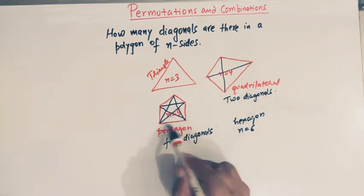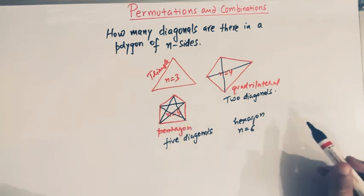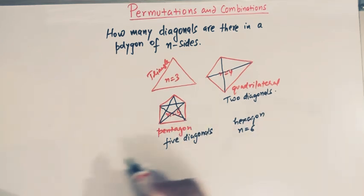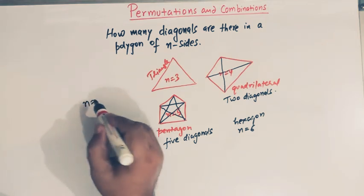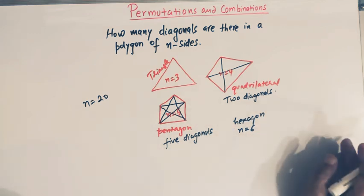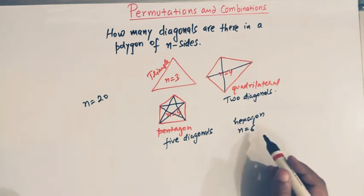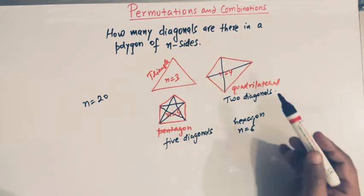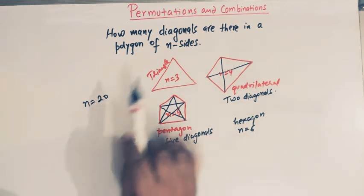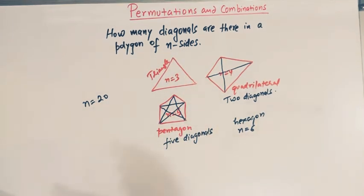However, this way of counting and drawing diagonals is not practical. Suppose we have a polygon of 20 sides — it is not practical to draw all the diagonals and count them. So we should derive a general formula for finding the number of diagonals of a polygon of n sides.